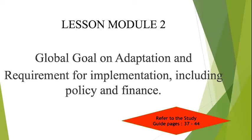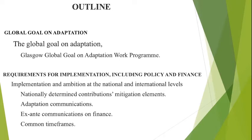Now let's move on with our work on lesson module two. The outline for lesson module two covers the Global Goal on Adaptation, the Glasgow Global Goal on Adaptation Work Program. It also covers the requirements for implementation, including policy and finance, basic implementation and ambitions at the national and international levels, nationally determined contributions, mitigation elements, adaptation communications, ex-ante communications on finance, and common timeframes.